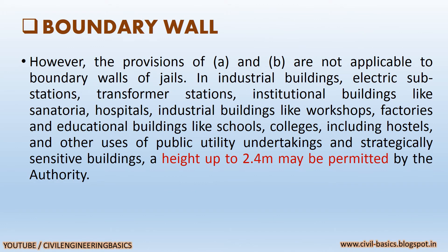Let's see the other requirements of Boundary Wall. The provisions of the first and second requirements are not applicable to boundary walls of jails, industrial buildings, electric substations, transformer stations, institutional buildings like sanatoria and hospitals, industrial buildings like workshops and factories, educational buildings like schools and colleges including hostels, and other public utility undertakings and strategically sensitive buildings, where a height up to 2.4 meter may be permitted by the authority.